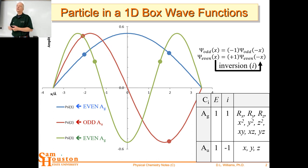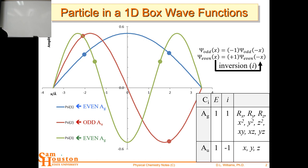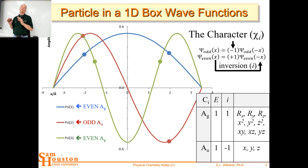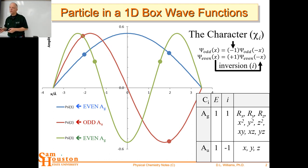Inversion is one of our symmetry elements — the lowercase i. When we invert the x-axis and evaluate what's happened to the wave function, that's the inversion symmetry element, and the character in front is the character that we have in the character tables. The mathematicians have done a great service for us — they've generated all the character tables for all the point groups. Whenever there's an odd function, the character in front of that inversion is minus one; when it's an even function, that's a plus one. That's how we can assign a g or a u to our wave functions.